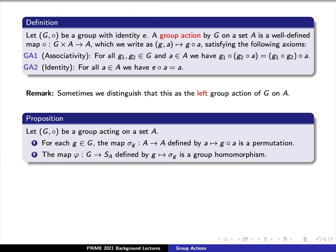Here, once again, we fix our element lowercase g and we map lowercase a to the element g circle lowercase a. The map phi, which sends our group G to the set of permutations S sub A, defined by sending an element lowercase g to the permutation sigma sub g, is an example of a group homomorphism. Recall here that we think of G as a group under our operation circle, and S sub A as a group under composition, which we also denote by circle.